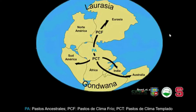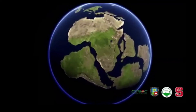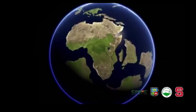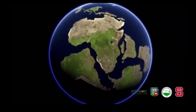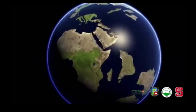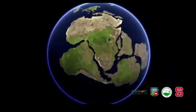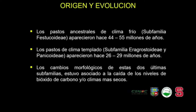La fracturación de la Pangea hizo que los continentes comenzaran a cambiar de posición, cambiando también de climas, condiciones de suelo y de hábitat. Los pastos ancestrales de clima frío de la subfamilia que originó a la familia Festucoidae aparecieron hace 44 a 55 millones de años, mientras los pastos de clima templado de las subfamilias Eragrostroidae y Panicoidae aparecieron hace 26 a 29 millones de años. Estos cambios estuvieron asociados a la caída de los niveles de CO₂ y a climas más secos.